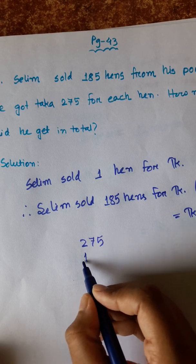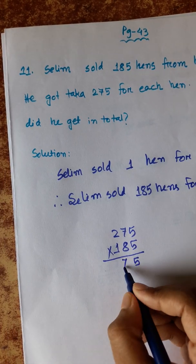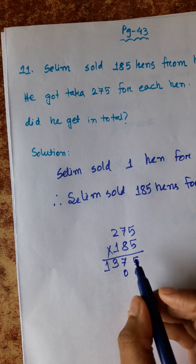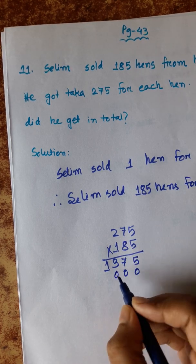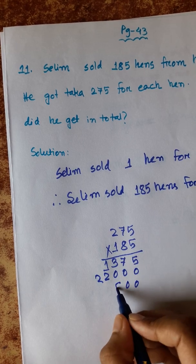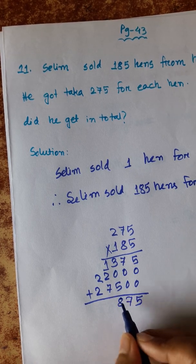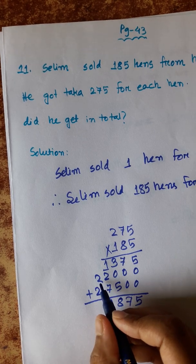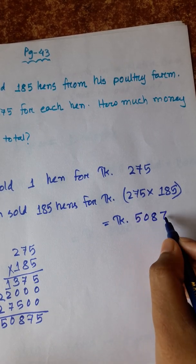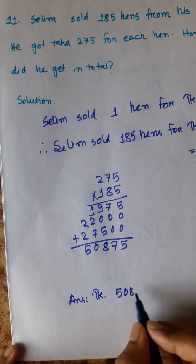Calculating 275 into 185: 5 fives are 25, carry 2; 5 sevens are 35, plus 2 is 37, carry 3; 5 twos are 10, plus 3 is 13. Then 8 fives are 40, carry 4; 8 sevens are 56, plus 4 is 60, carry 6; 8 twos are 16, plus 6 is 22. Then ones: 1 into 275 is 275. Adding 1375 plus 2200 plus 275 gives taka 50,875. The answer is taka 50,875.